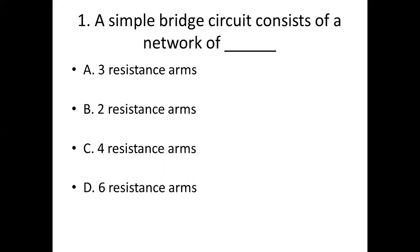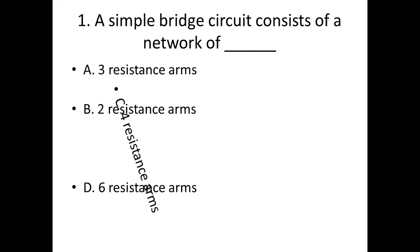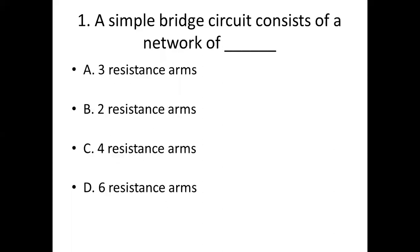First bit. A simple bridge circuit consists of a network of dash. Option A: 3 resistance arms. Option B: 2 resistance arms. Option C: 4 resistance arms. Option D: 6 resistance arms. Answer: Option C, 4 resistance arms.